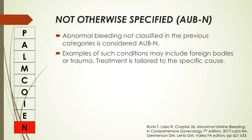And finally, AUB-N, or AUB not otherwise specified. This is abnormal uterine bleeding not classified in the previous categories. Examples of such conditions may include foreign bodies or trauma, and the treatment is tailored to the specific cause.